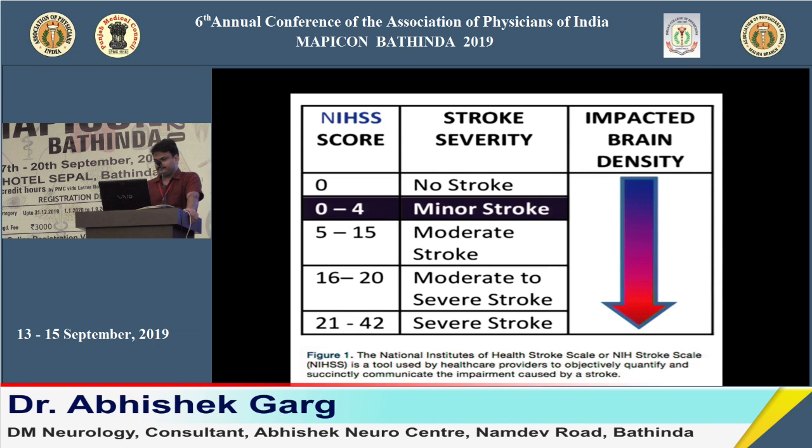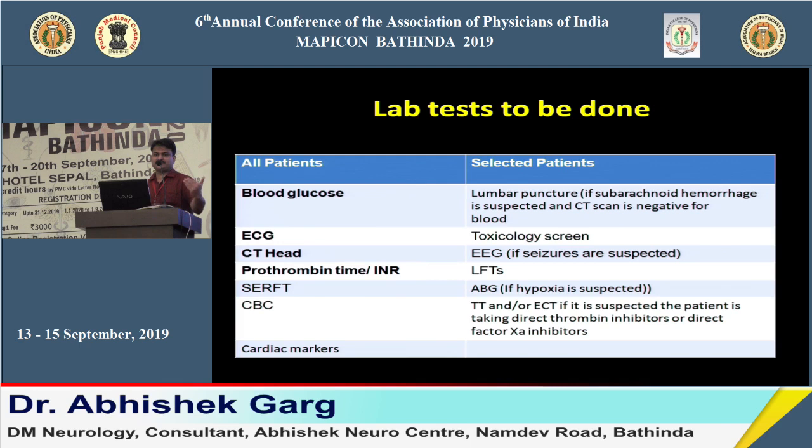Three tests should be done immediately in the emergency for suspected acute ischemic stroke: blood sugar, ECG, and CT scan. Sugar should be estimated immediately because correcting hypoglycemia may lead to immediate recovery. ECG is needed to rule out myocardial ischemia, and CT differentiates hemorrhage from ischemia.